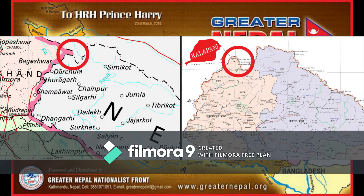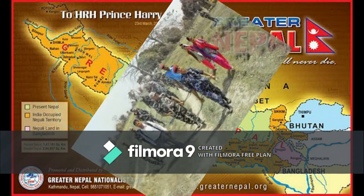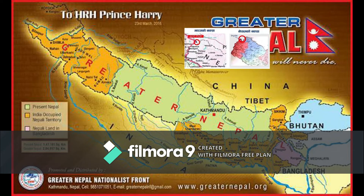According to Nepalese government estimates, of the 8,000 boundary pillars along the border, 1,240 pillars are missing, 2,500 require restoration, and 400 more need to be constructed. The survey teams conducted a survey of the border pillars based on strip maps prepared by the Joint Technical Level Nepal-India Boundary Committee.